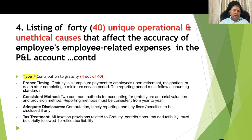Type 7, contribution to gratuity: there are 4 causes. One is proper timing: gratuity is a lump sum payment to employees upon retirement, resignation, or death after completing a minimum service period, and the reporting period must follow accounting standards. Two is consistent method: two common methods for accounting for gratuity are actuarial valuation and the provisions method — reporting methods must be consistent from year to year. Three is adequate disclosures: computation, timely reporting, and any fines or penalties to be disclosed. Four is tax treatment: all taxation provisions related to gratuity contribution and tax deductibility must be strictly followed, particularly when gratuity payment is beyond a specific upper limit.